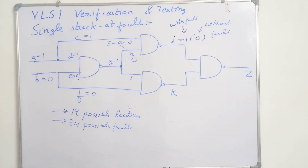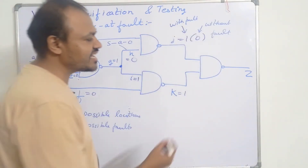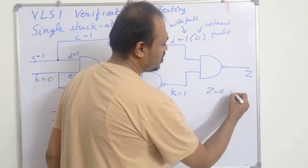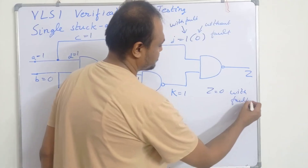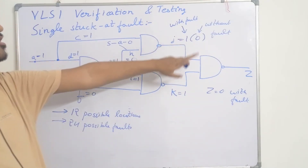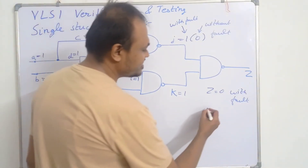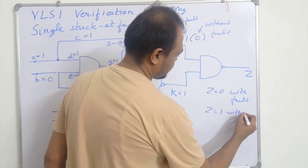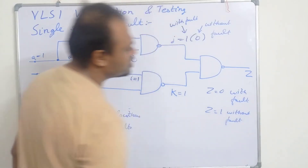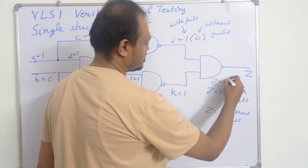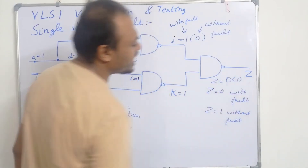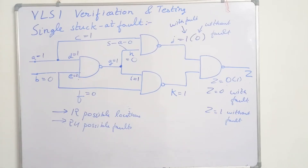In bracket, I have written the value without the fault. Similarly, I is equal to 1, F is 0, so K will be equal to 1. The output Z is equal to 0 with fault because K is equal to 1 and J is equal to 1, so Z equals 0. But without fault, Z is equal to 1. So we can write Z equals 0 (with fault) and 1 (without fault).